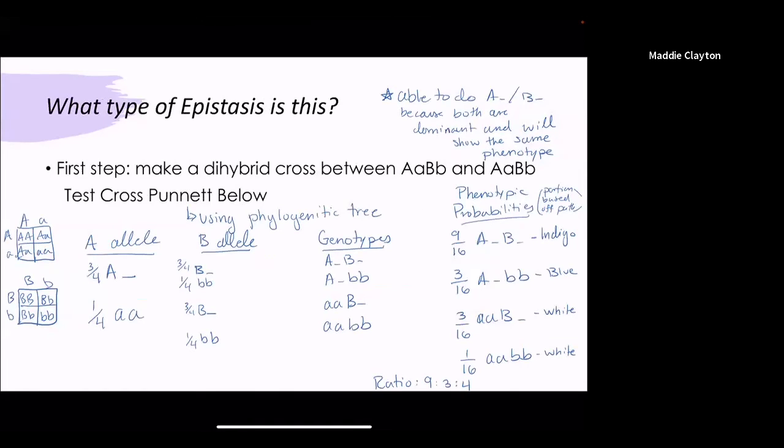So what type of epistasis is this? To figure this out we have to first make a dihybrid cross between heterozygous A and B of both parents.